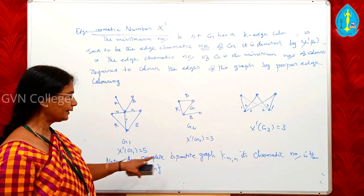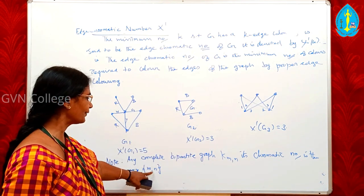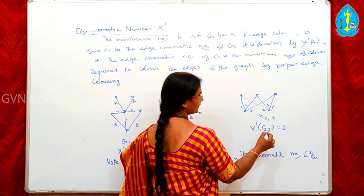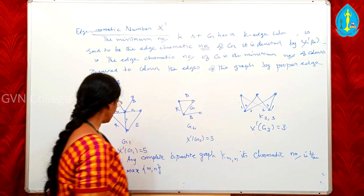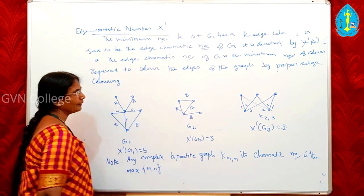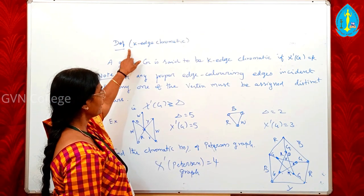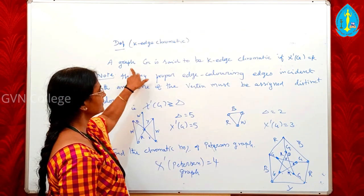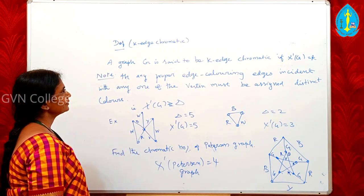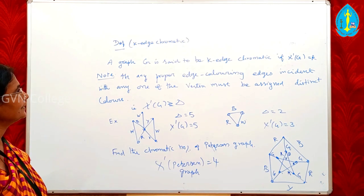For any complete bipartite graph K(m,n), its edge chromatic number is max(m, n). For example, if it is K(2,3), then χ'(G) = 3. Here for K(m,n), the maximum of m and n is the edge chromatic number of the graph. A graph G is said to be K-chromatic if χ'(G) = K.